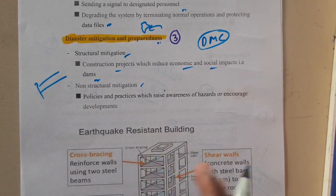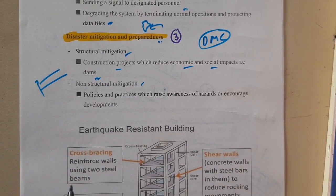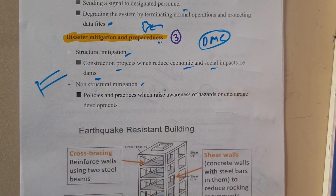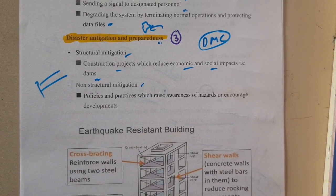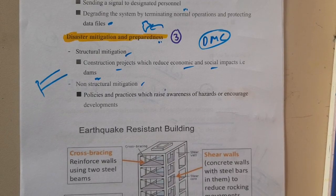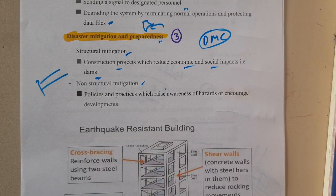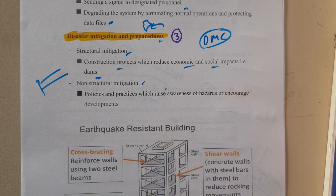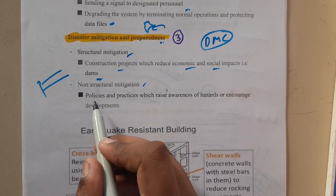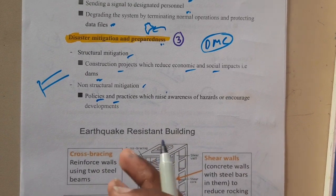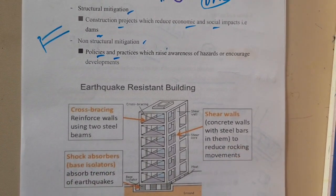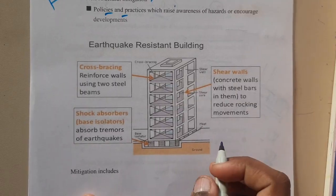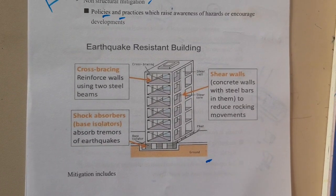Non-structural mitigation involves maintaining policies. For example, if crops or buildings have collapsed, they will provide a certain amount of money or funds. That comes under non-structural mitigation — basically those are policies or practices.